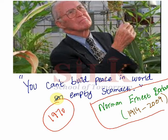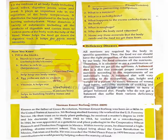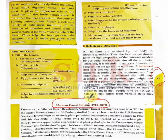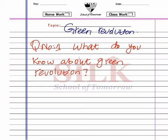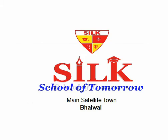Norman Ernest Borlaug was born in 1914 and passed away in 2009. Dear students, today's lecture is about him, and you have to search more about him. Book page number 17 — book reading. You also have to mention Norman Ernest Borlaug's services regarding the green revolution. Now what you have to do: share the information regarding this scientist with your parents and friends. Thank you very much. Assalamu alaikum.